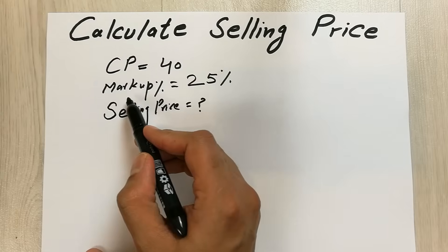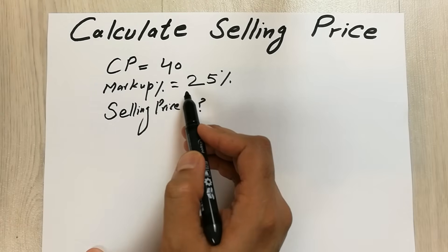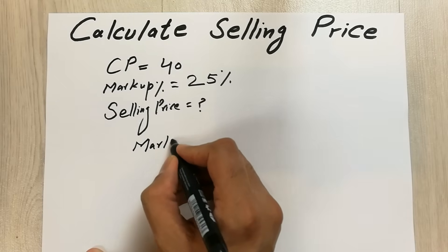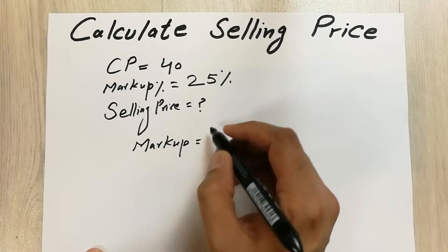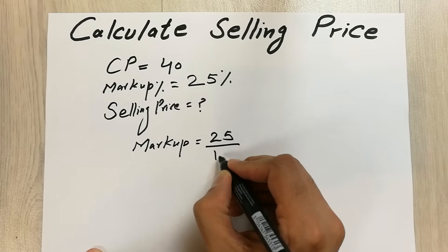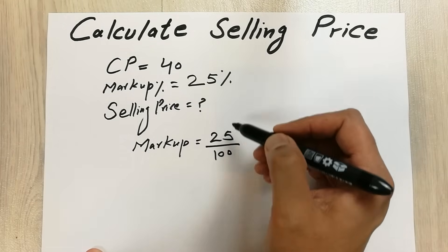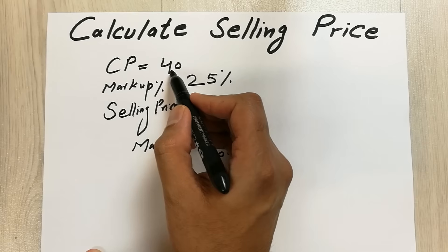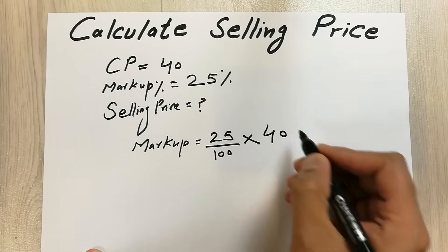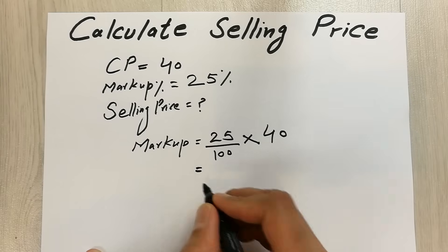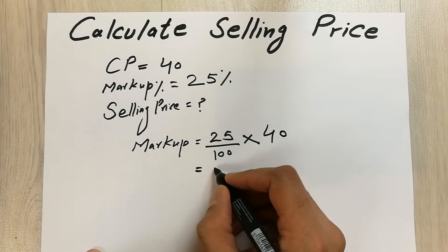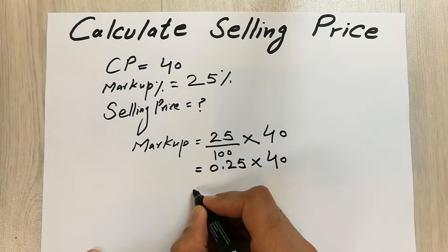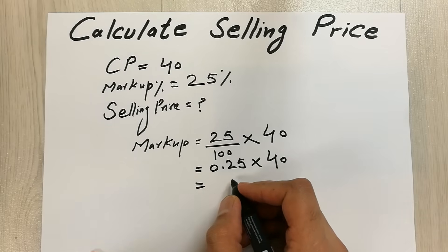First, we find the amount of this markup percentage. To find the markup amount, we divide 25 by 100 — because it's a percentage — and then multiply by the cost price, which is 40. So 25 divided by 100 equals 0.25, and 40 multiplied by 0.25 equals 10.